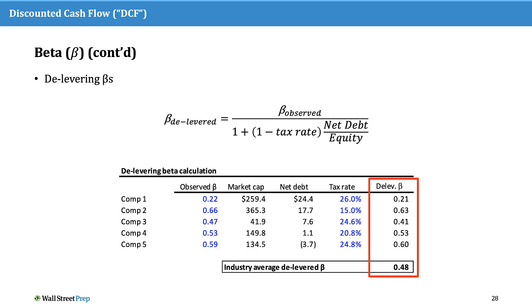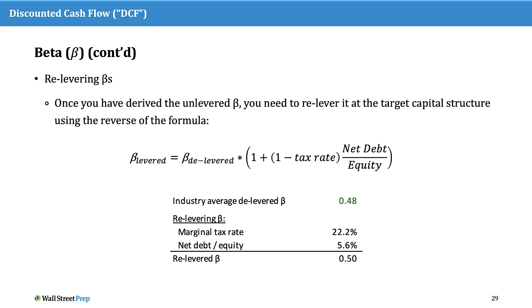With the same set of comps, we delever each beta using the equation shown here, and then take an average industry delevered beta — in this case, 0.48. Once we've derived the unlevered industry beta, we need to relever it at the target capital structure using the reverse of the formula. Applying our new tax rate, we get a relevered beta for Starlight of 0.5.